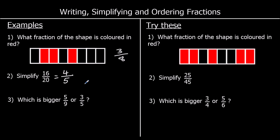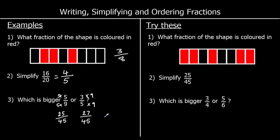Question 3: which is bigger, 5 ninths or 3 fifths? To compare two fractions, we can make the bottom numbers — the denominators — the same. What number is in the nine times table and the five times table? 45. So if we times the top and bottom of 5 ninths by 5, and times the top and bottom of 3 fifths by 9, we get 25 out of 45 and 27 out of 45. So 27 out of 45 is bigger, therefore 3 fifths is bigger.